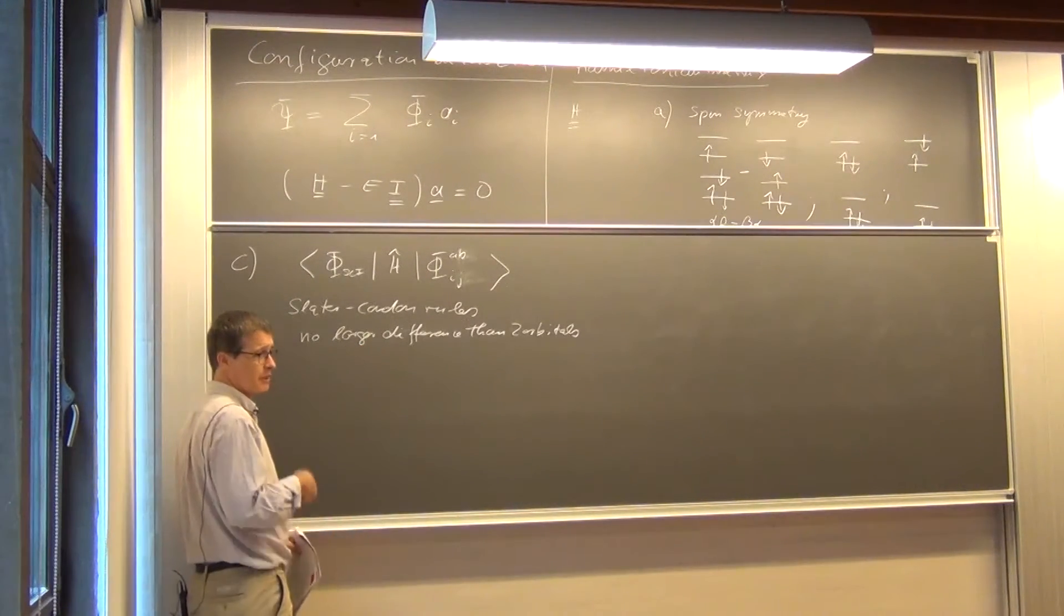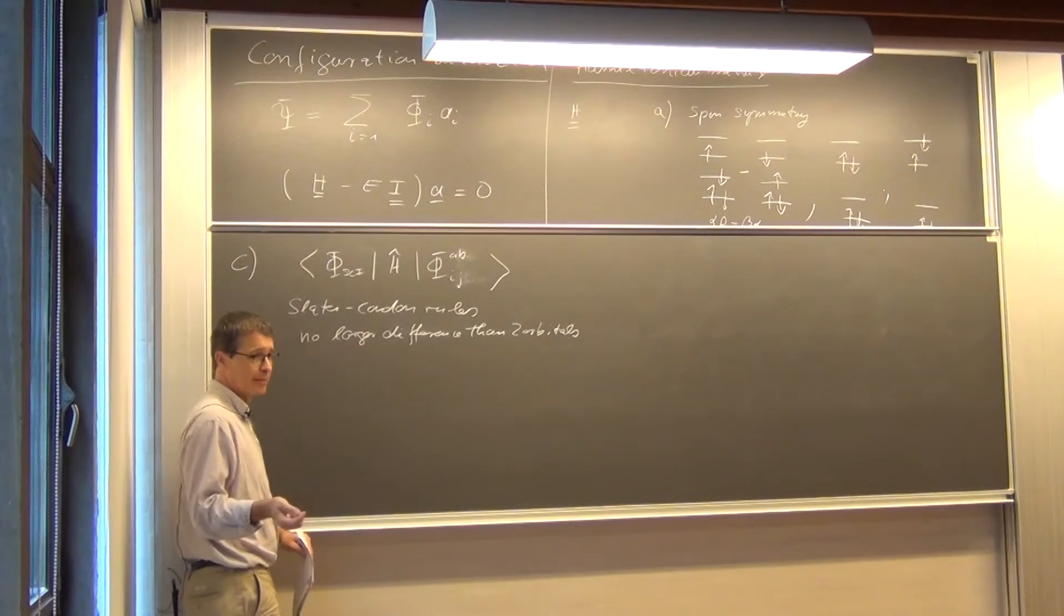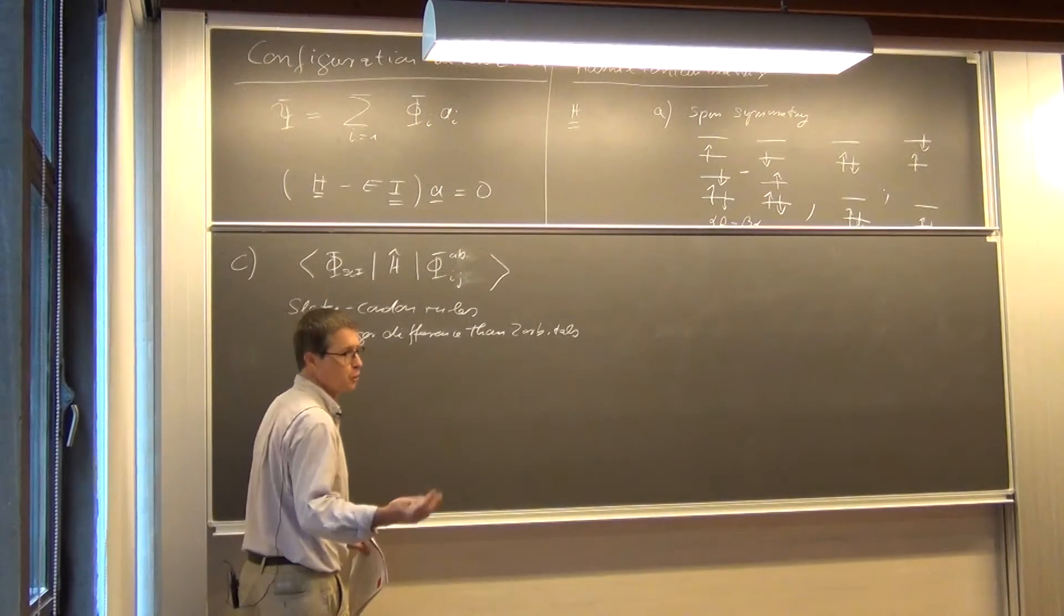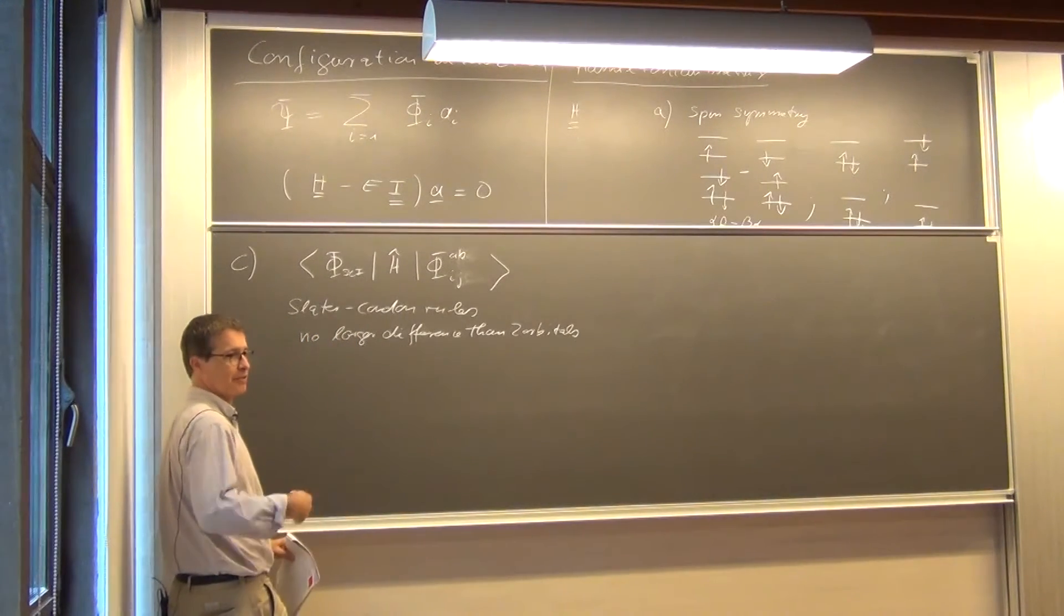And we're going to come back to that also next week. When we look at Møller-Plesset perturbation theory and coupled clusters, because there again, we always end up with this kind of matrix elements. And the question is, which ones actually are different from zero?